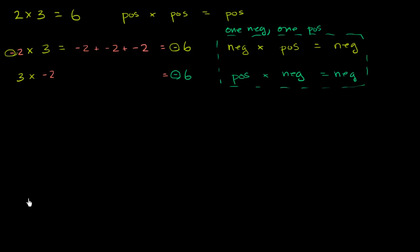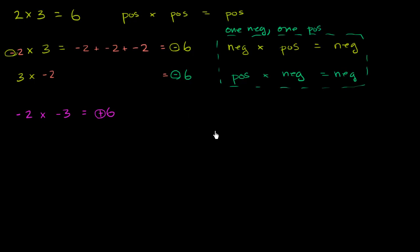Now let's think about the third circumstance: when both of the numbers are negative. If I were to multiply negative 2 times negative 3 — this might be the least intuitive of all, and here I'm just going to introduce you to the rule; in future videos we'll explore why this is and why this makes mathematics all fit together. You say, well, 2 times 3 would be 6, and I have a negative times a negative. One way to think about it is the negatives cancel out, and so you actually end up with positive 6. So if I have a negative times a negative, the negatives cancel out and that gives me a positive number.